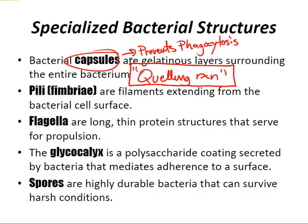Bacteria also have pili or fimbriae — filaments extending from the bacterial cell surface that mediate attachment to human cell surface receptors. The clinical correlate is that strains of Neisseria gonorrhoeae lacking the pilus are not pathogenic. The sex pilus mediates conjugation between bacteria.